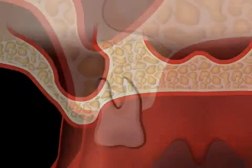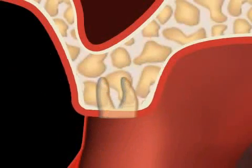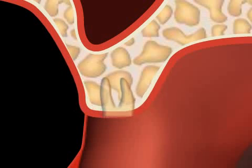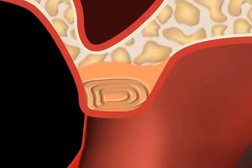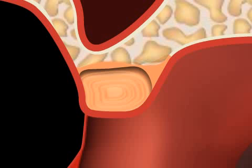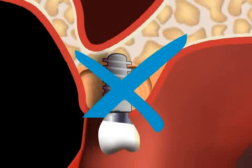Sometimes, a so-called flabby ridge forms. This is an alveolar ridge consisting of connective tissue, usually observed when the osseous alveolar ridge regresses at a very quick rate, for example due to an ill-fitting dental prosthesis. In such cases, often a fibrous ridge remains, and is unfortunately not suitable for an implantation.